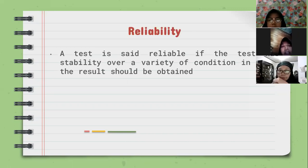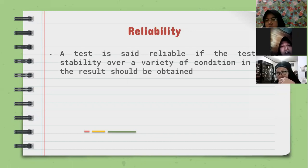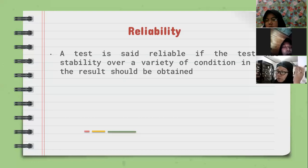The next is about reliability. If validity talks about the test measuring what needs to be tested, reliability means a test is said to be reliable if it has stability over a variety of conditions in which the results should be obtained. In simple language, reliability is the consistency of the score that will be obtained by the test.